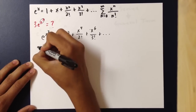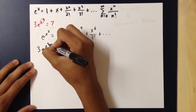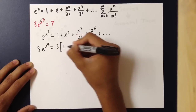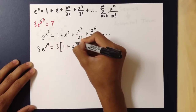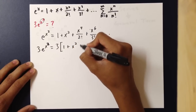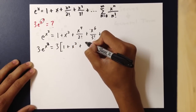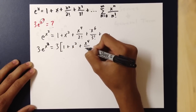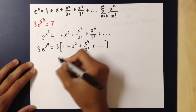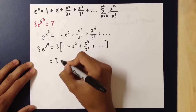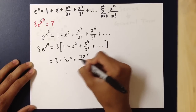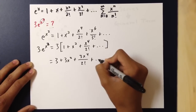Now let's say we want to multiply that by 3. This would just be 3 times the whole Taylor polynomial, since the 3 is multiplied to e to the x squared and not to x itself. We distribute 3 out to each term, giving us 3 plus 3x squared, plus 3x to the fourth over 2 factorial, and so on.